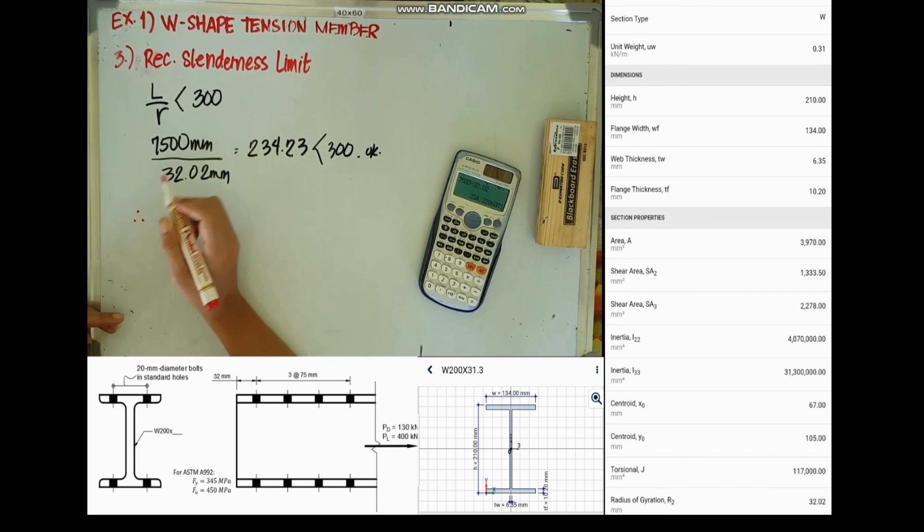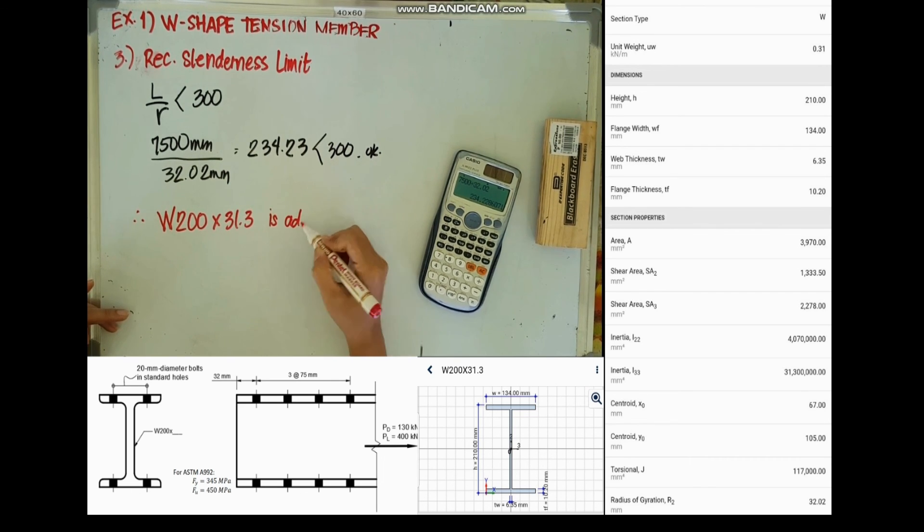So we can now conclude that the section we designed, W200 by 31.3, is adequate to carry the given loads.